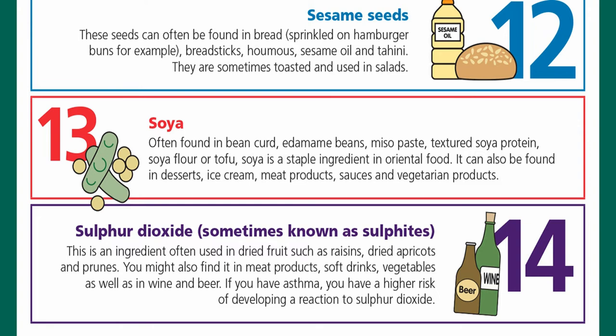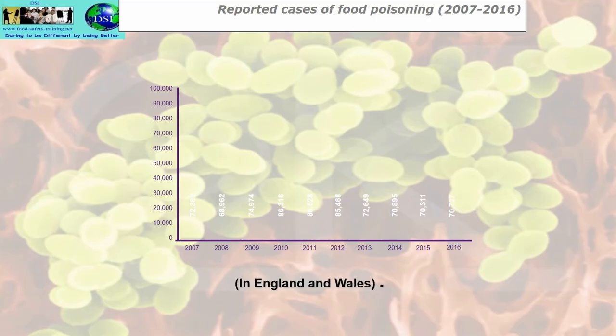And the last allergen is sulphur dioxide, sometimes known as sulphites. This is often used in dried fruits such as raisins, dried apricots, and prunes. You might also find it in meat products, soft drinks, vegetables, and in wine and beer. If you have asthma, you have a higher risk of developing a reaction to sulphur dioxide.